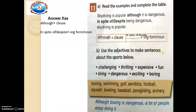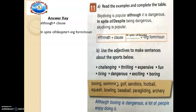Now use the adjectives to make sentences about the sports below. The adjectives given are: challenging, thrilling, expensive, dangerous, and exciting. The sports listed are boxing, swimming, golf, and aerobics. For example: although boxing is dangerous, a lot of people enjoy doing it. We want to use 'although' or 'in spite of' while making the sentences.